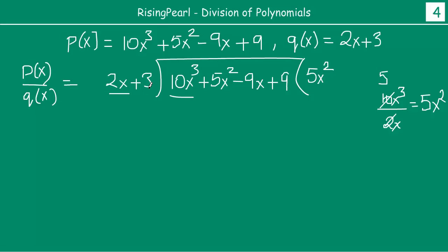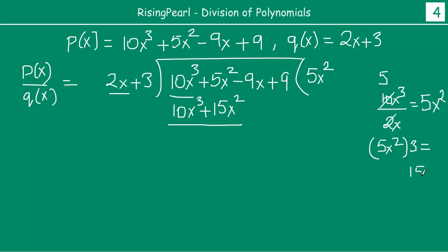Now the next step: you are going to multiply 5x squared by all the terms of your divisor. So multiply 5x squared with 2x — this gives you 10x cubed. Now 5x squared multiplied by 3 gives you 15x squared. So you get plus 15x squared. Now you are going to subtract this. So 10x cubed will cancel out, this becomes 0. And 5x squared minus 15x squared gives you minus 10x squared.